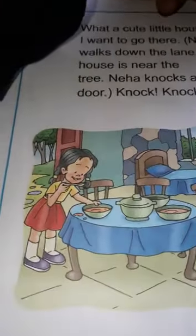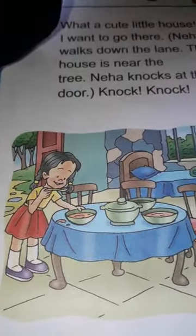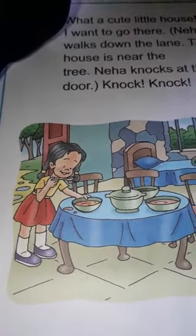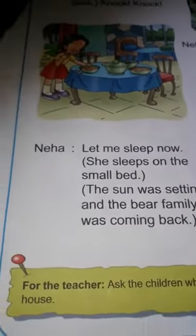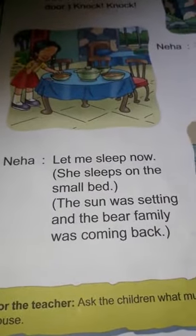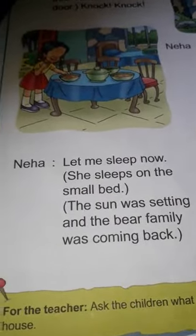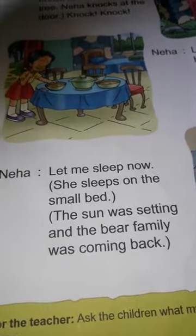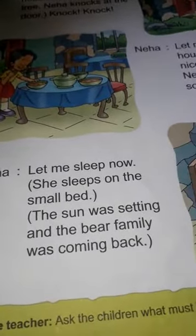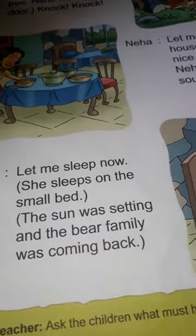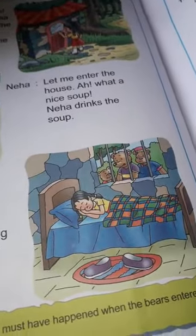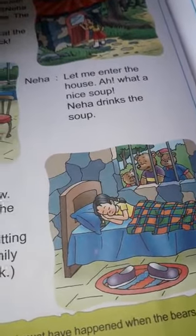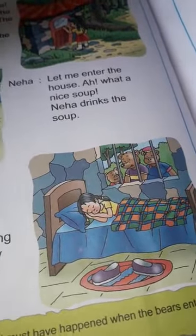You can see in the picture very clearly — Neha likes the soup and she is drinking the soup. Last paragraph: Neha is saying 'Let me sleep now.' Ab Neha ne soup pee liya toh usko neend aane lagi. 'She sleeps on the small bed' — ek chota sa bed tha, Neha uspe so gai.